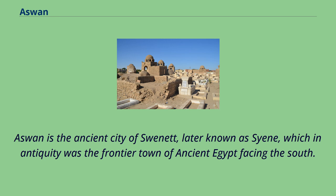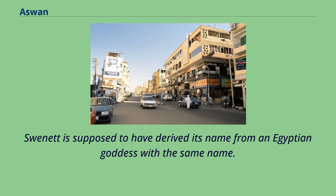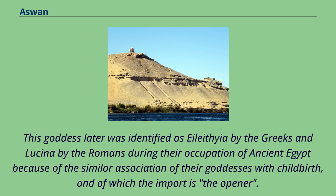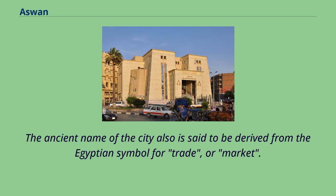Aswan is the ancient city of Swenet, later known as Syene, which in antiquity was the frontier town of ancient Egypt facing the south. Swenet is supposed to have derived its name from an Egyptian goddess with the same name. This goddess was later identified as Elephia by the Greeks and Lucina by the Romans due to similar associations with childbirth, of which the import is 'the opener.' The ancient name is also said to be derived from the Egyptian symbol for trade or market.